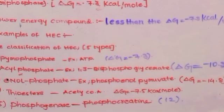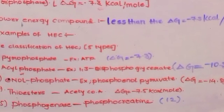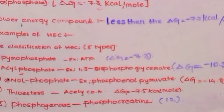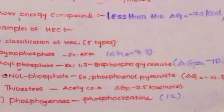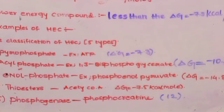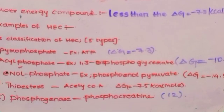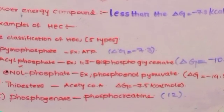Next, enol phosphate. Example: phosphoenolpyruvate. Remember, its energy is ΔG = -14.8 kilocalories per mole.